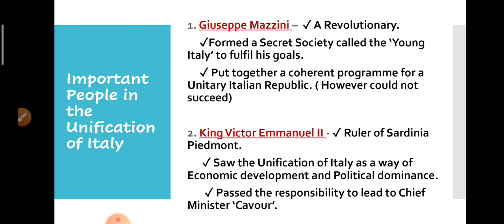The second important person was King Victor Emmanuel II. He was the king of the Italian princely house, Sardinia Piedmont, that we just discussed. King Victor Emmanuel took the responsibility of unification of Italy, as he saw a possibility of economic development. He thought that if he plays a major role in the unification of Italy, it will not only bring economic development but also political dominance.